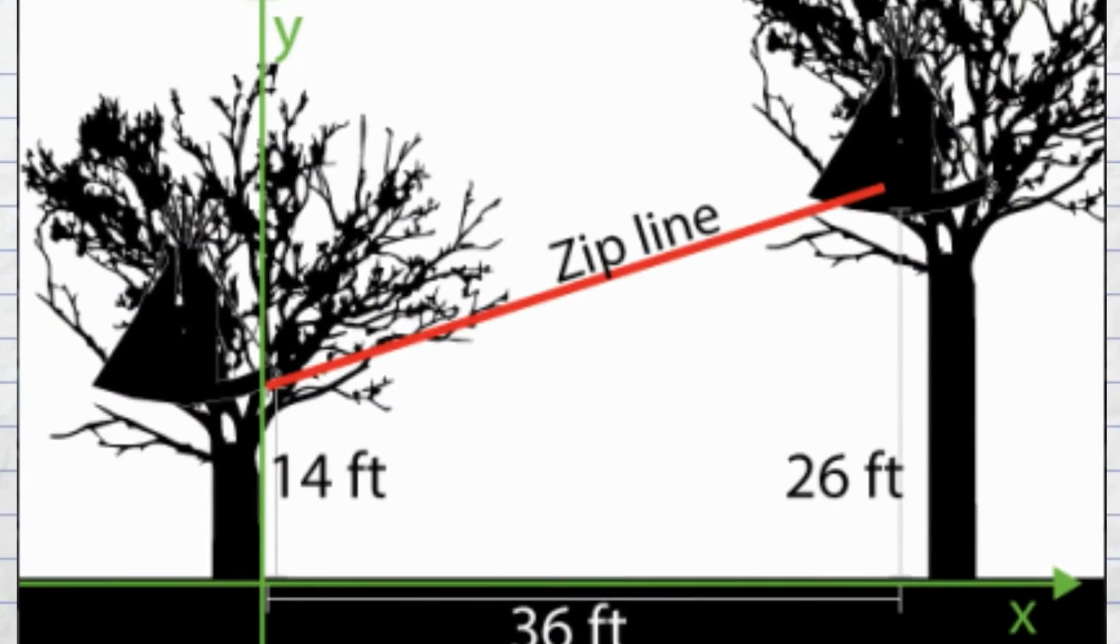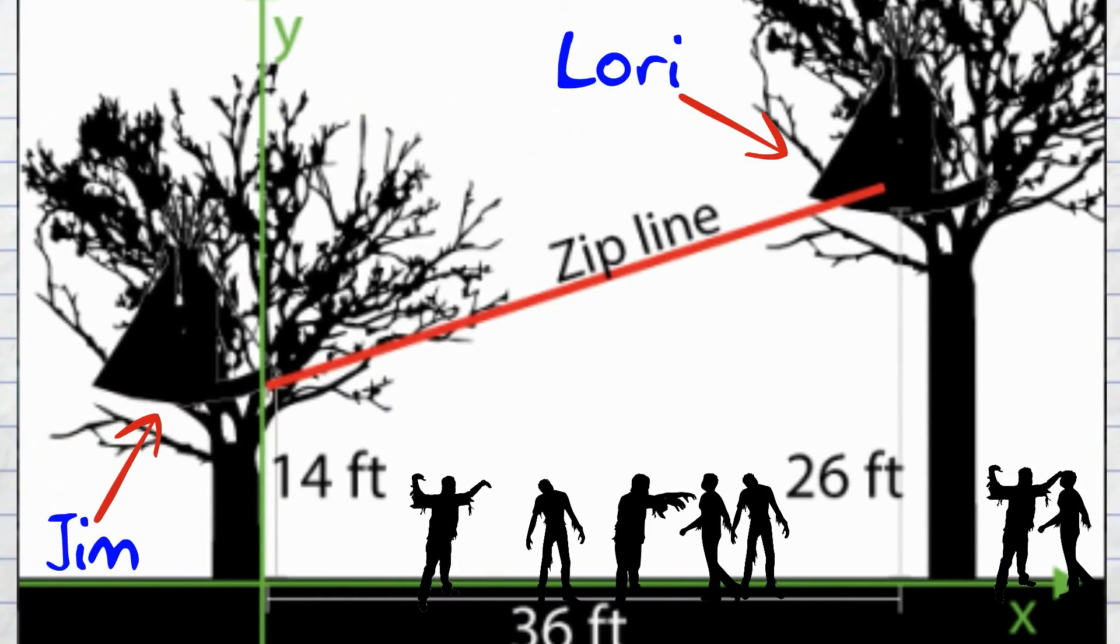Let's consider our picture. Based on the question, we know Jim's house is here, and Lori's house is here. Since the ground is littered with zombies, they need a way to reach each other without having to go to the ground. We're concerned with modeling the zip line with the equation y equals mx plus b.